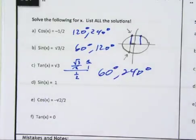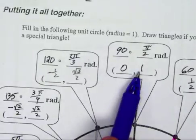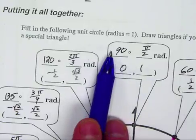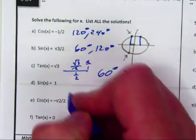Sine being 1, it's pretty easy. I just look for 1 in the sine location, and that only happens at 90 degrees. It's the only one that it does. And so this one's 90 degrees.